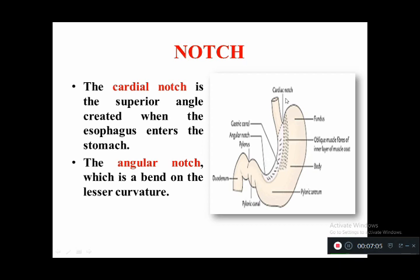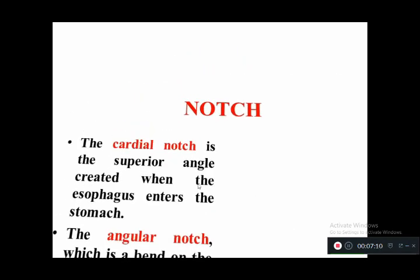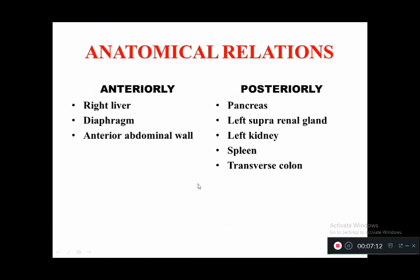The anatomical relations of the stomach: anteriorly it relates to the right liver, diaphragm, and anterior abdominal wall. Posteriorly it relates to the pancreas, left suprarenal gland, left kidney, spleen, and transverse colon.